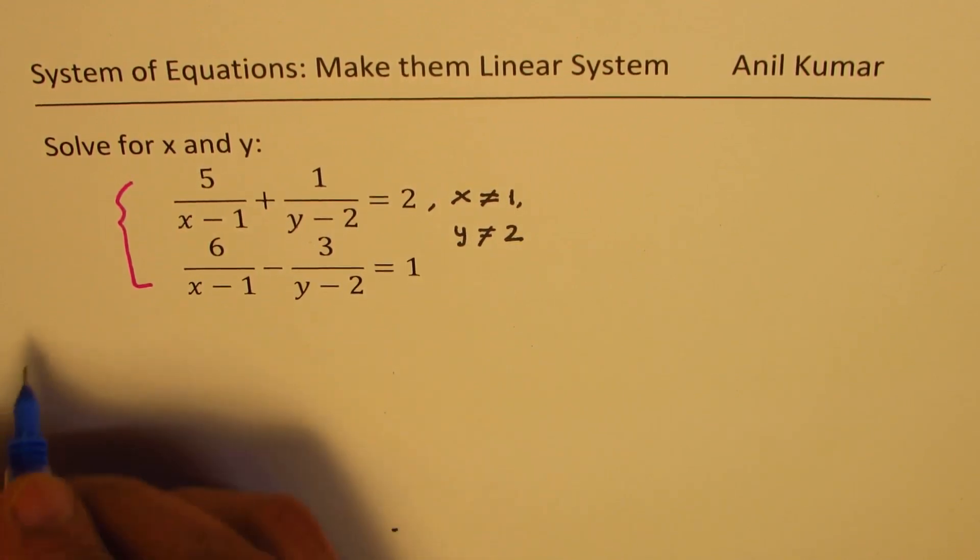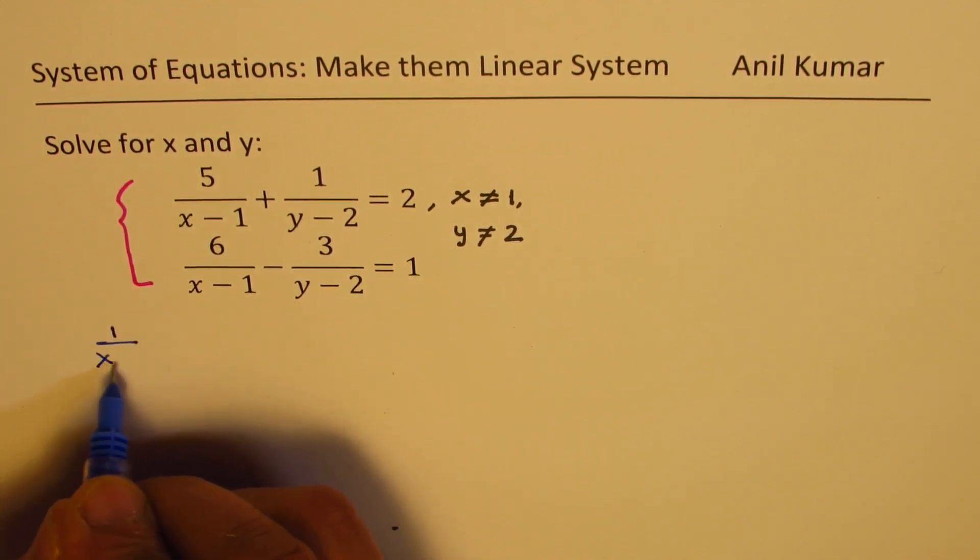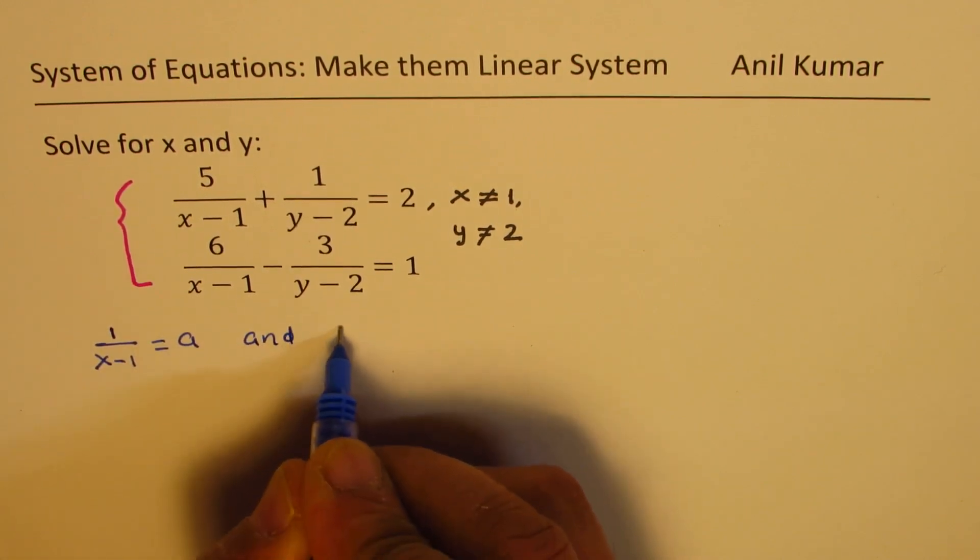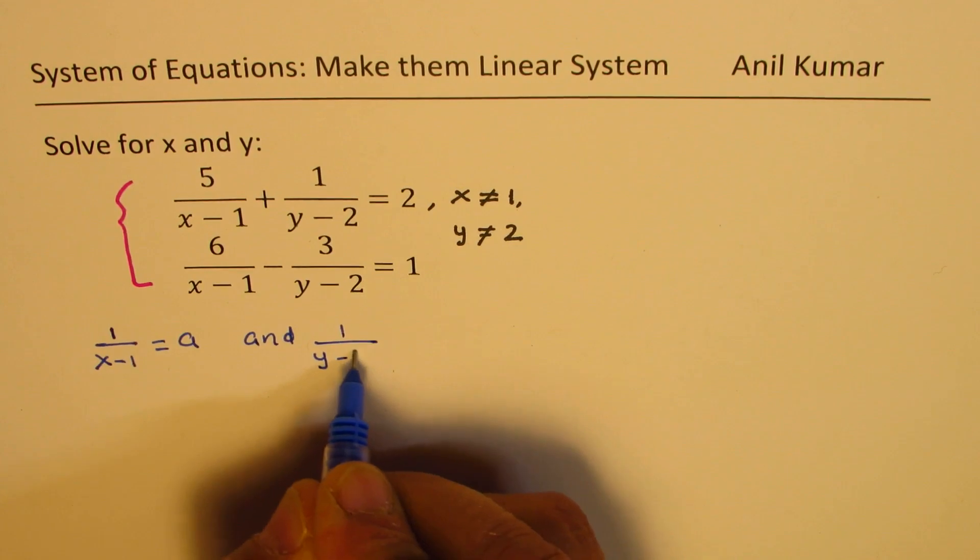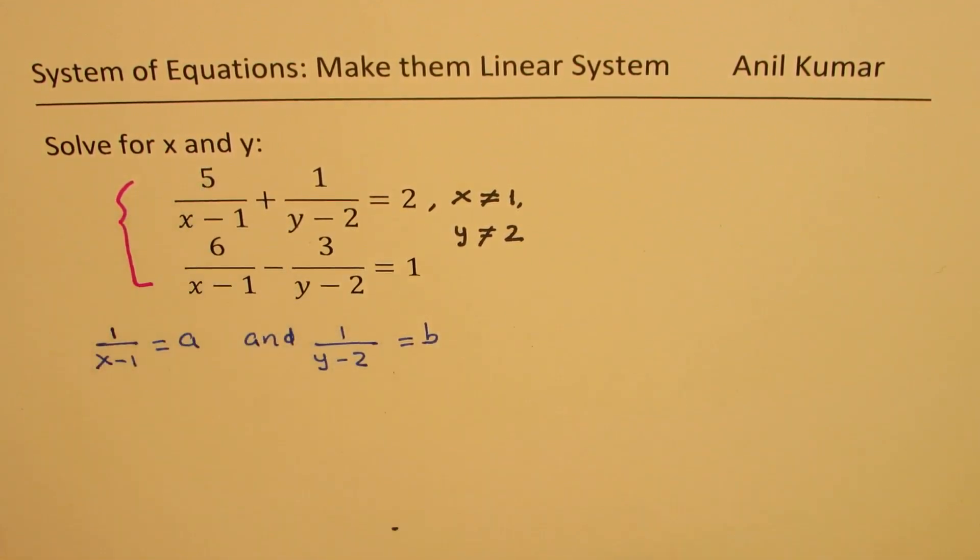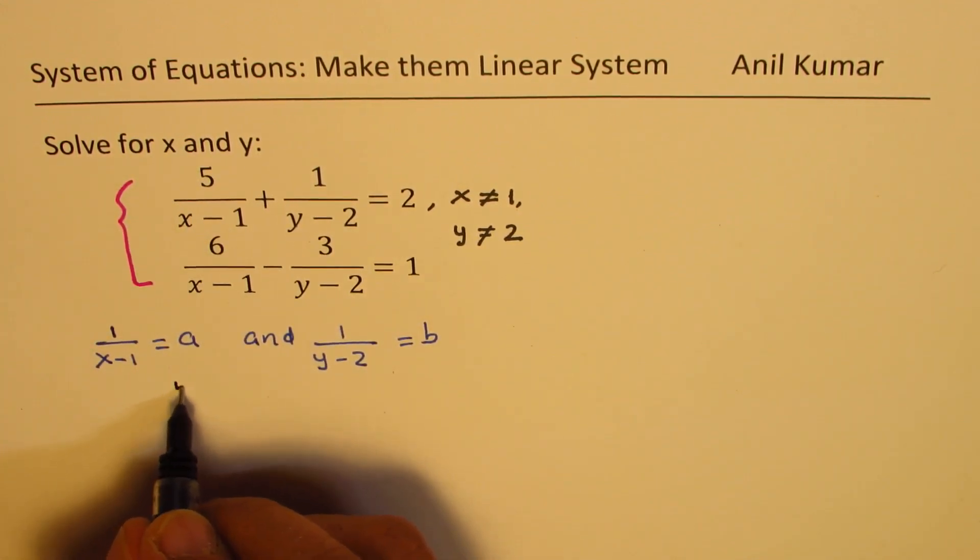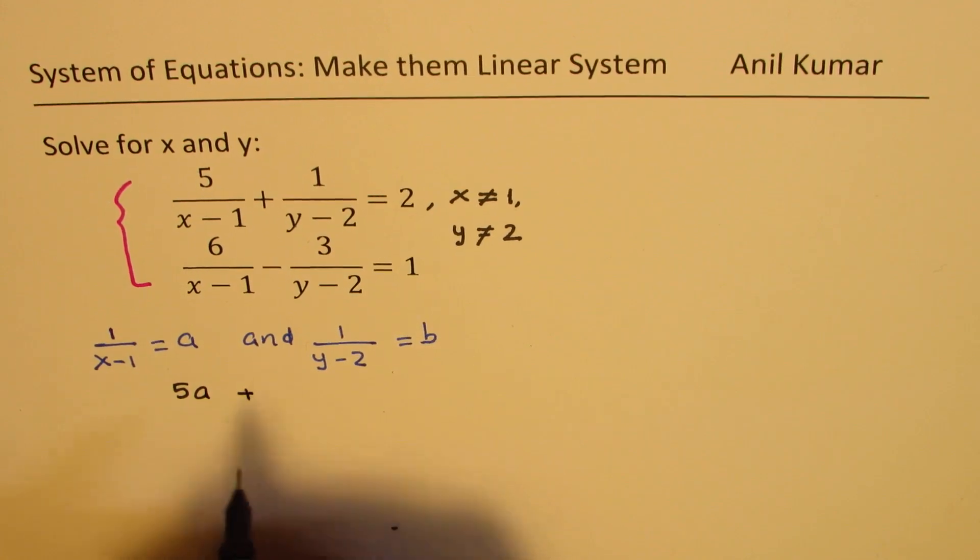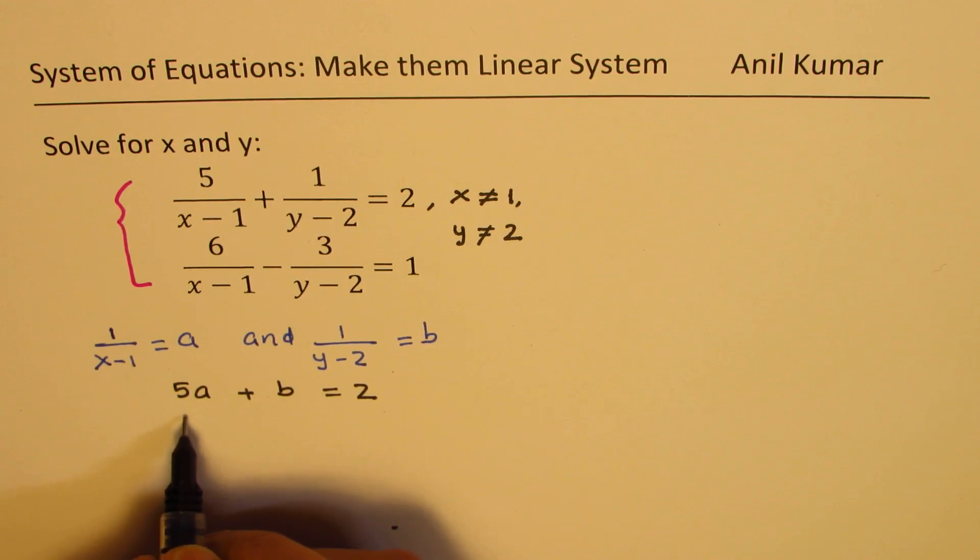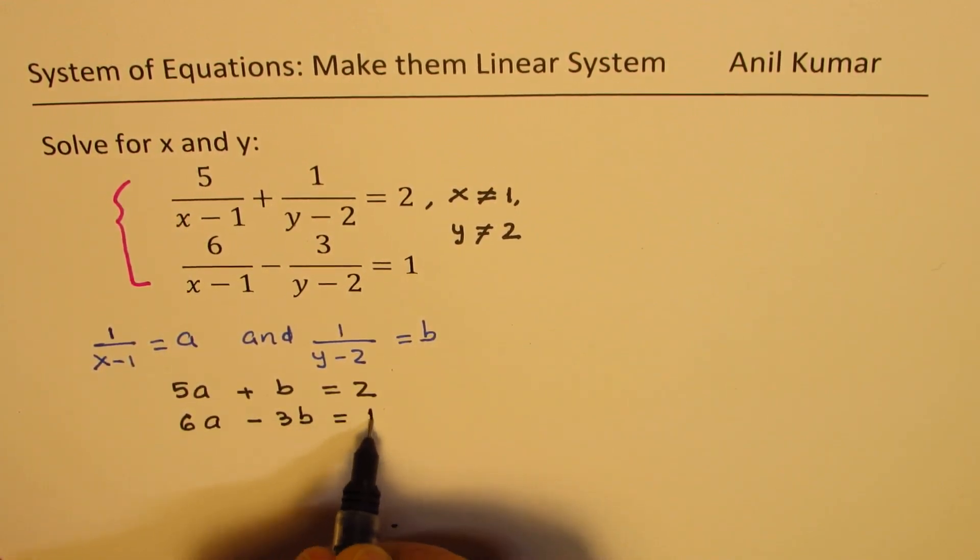So here, again, we'll make the substitution. Let 1 over x minus 1 be equal to a and 1 over y minus 2 equals b. Once we make this substitution, we get these equations as 5a plus b equals 2. The second equation becomes 6a minus 3b equals 1.